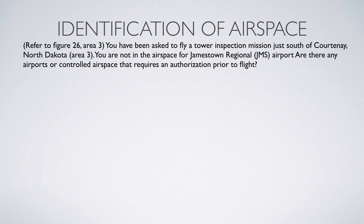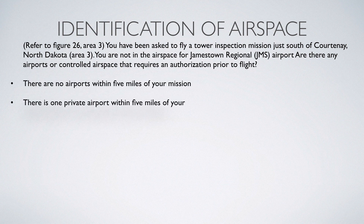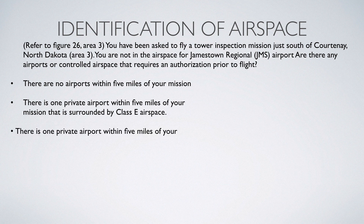The first option is there are no airports within five miles of your mission. Second option is there is one private airport within five miles of your mission that's surrounded by Class E airspace. And the third option is there's one private airport within five miles of your mission but it does not have any controlled airspace surrounding it.